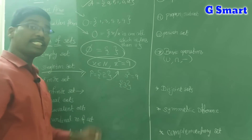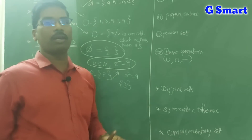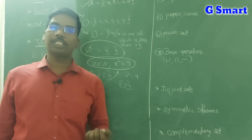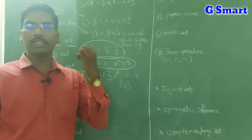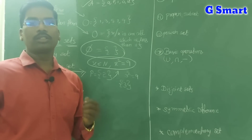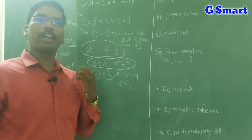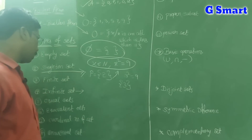Infinite set — a set which has uncountable elements. A set which has uncountable elements is called an infinite set.